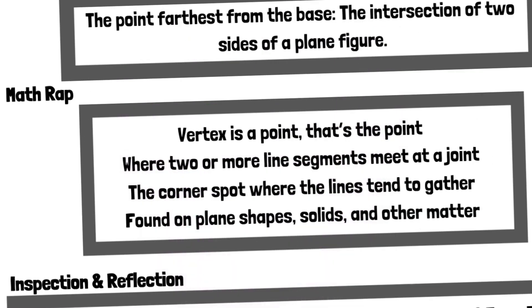Math Wrap. Vertex is a point. That's the point. Where two or more line segments meet at a joint. The corner spot where the lines tend to gather. Found on plane shapes, solids, and other matter.